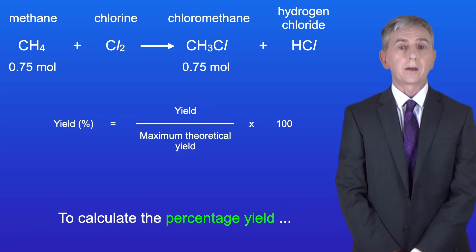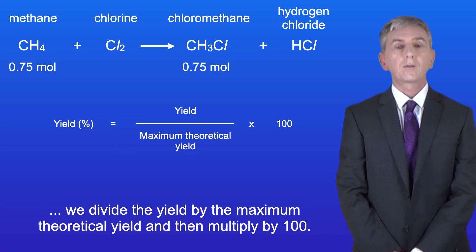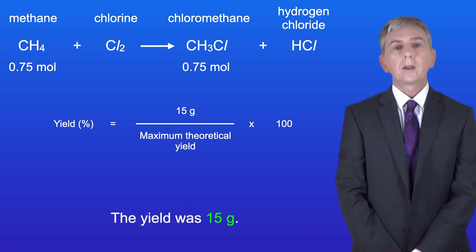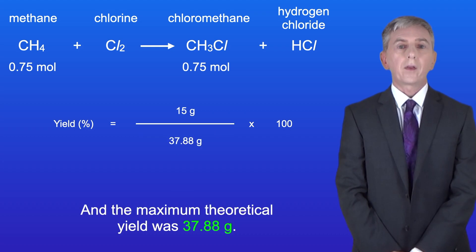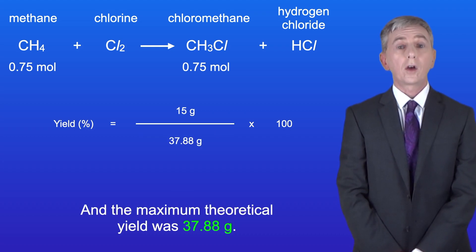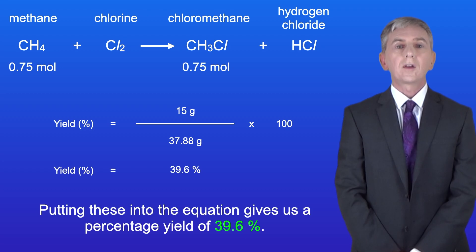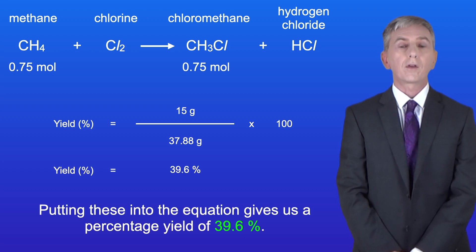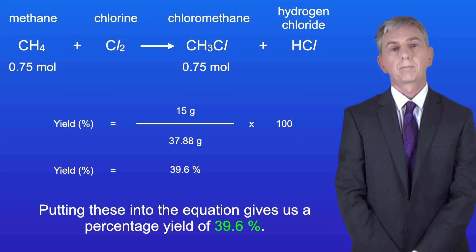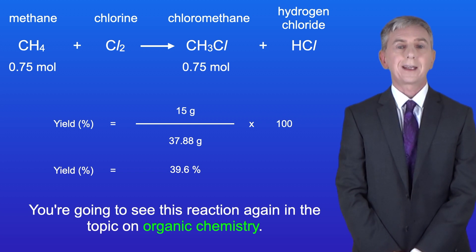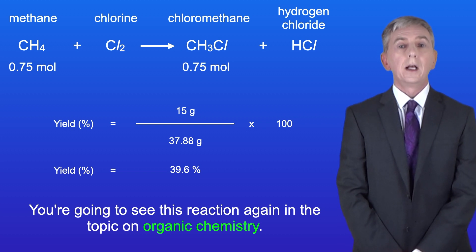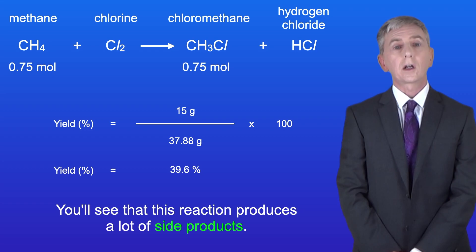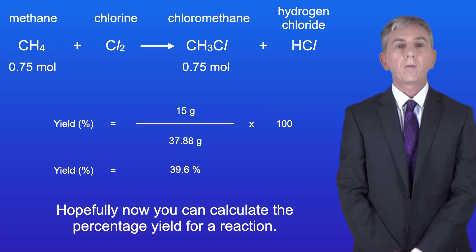To calculate the percentage yield we divide the yield by the maximum theoretical yield and then multiply by 100. The yield was 15 grams and the maximum theoretical yield was 37.88 grams, giving us a percentage yield of 39.6%. You're going to see this reaction again in the topic on organic chemistry, where it produces a lot of side products. Hopefully now you can calculate the percentage yield for a reaction. Thank you.